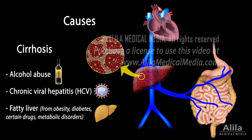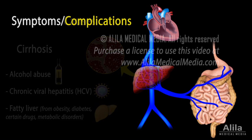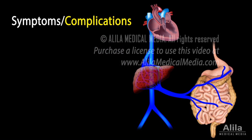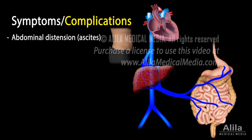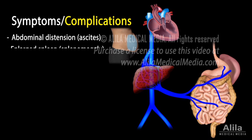Clinical presentation of portal hypertension may include abdominal distention, known as ascites, a result of fluid leaking into the abdominal cavity under high blood pressures. It may also include an enlarged spleen, due to congestion of the splenic veins.